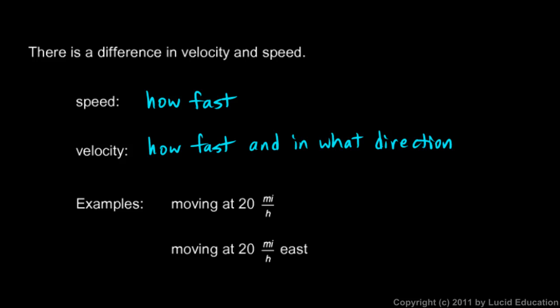And so you see the key thing here with velocity is this direction is added on. So velocity, in other words, is a vector. Speed, we would say, is a scalar. Velocity is a vector.